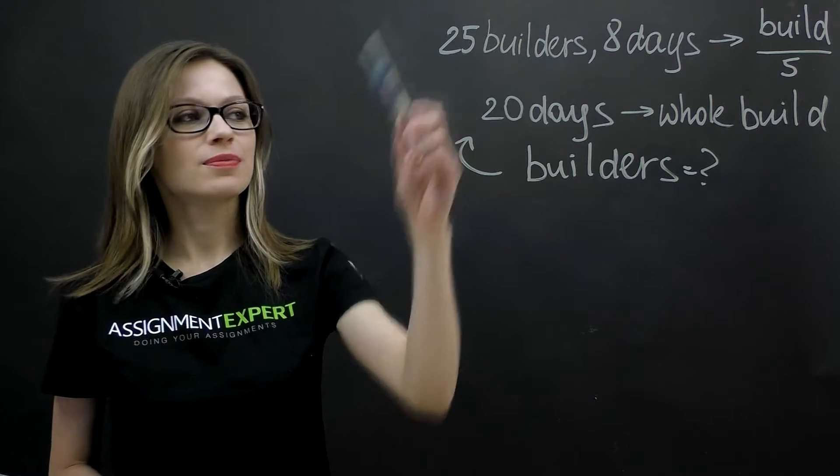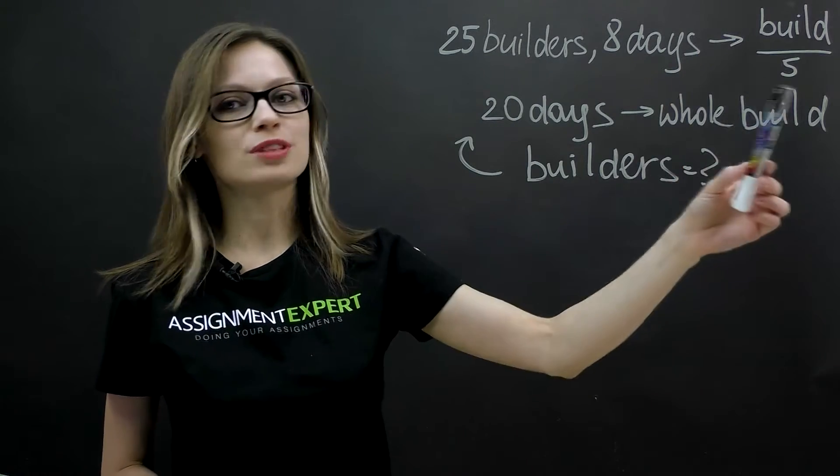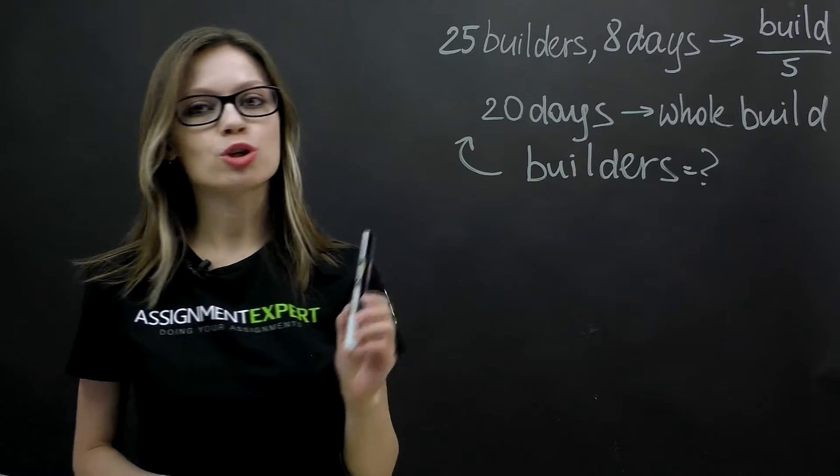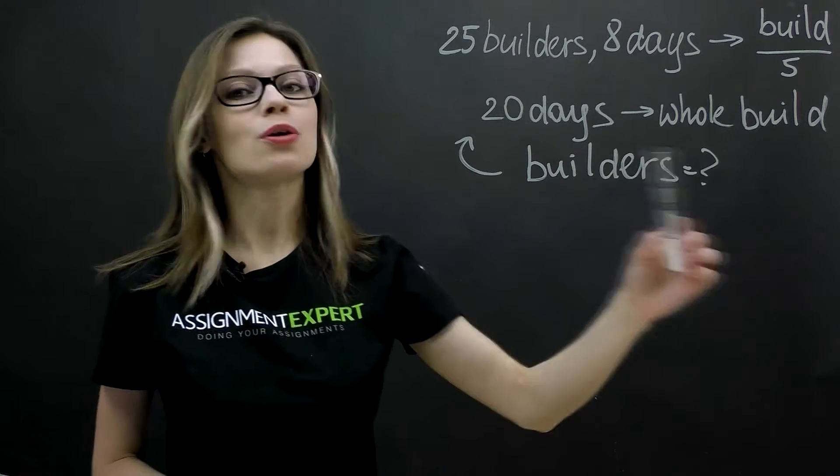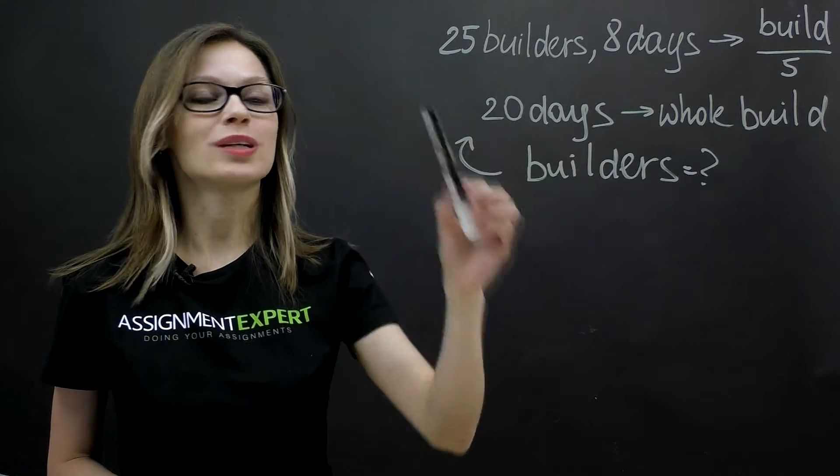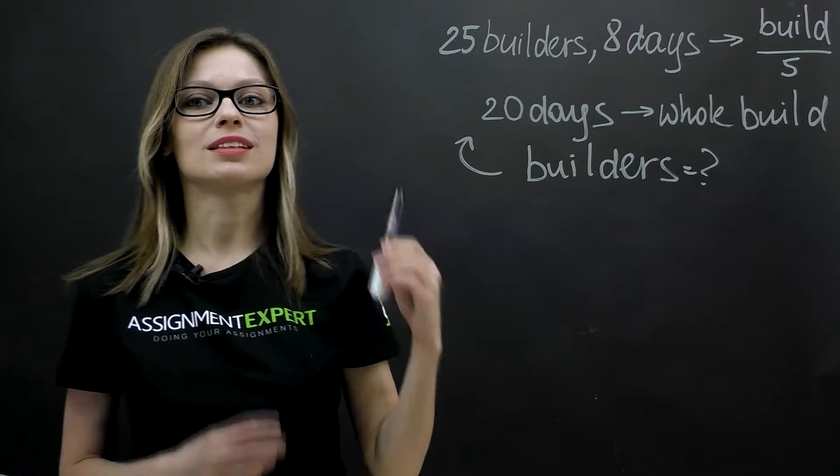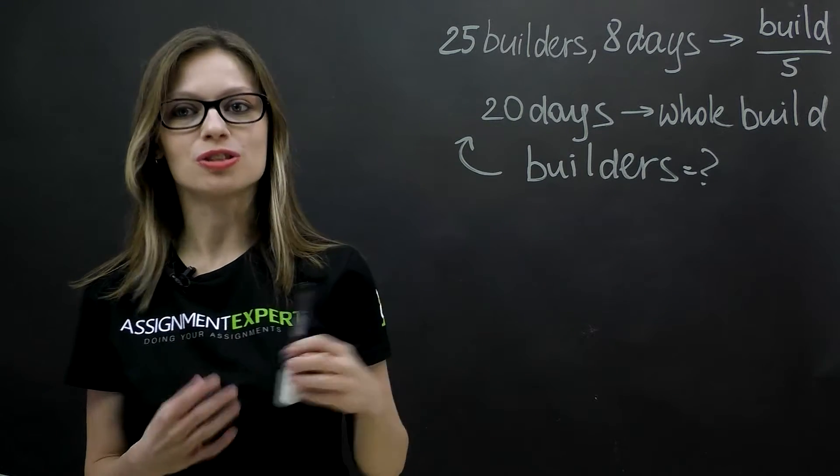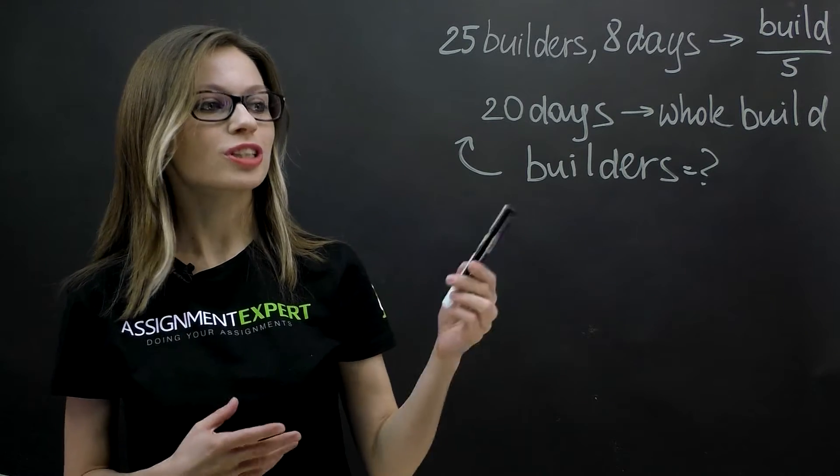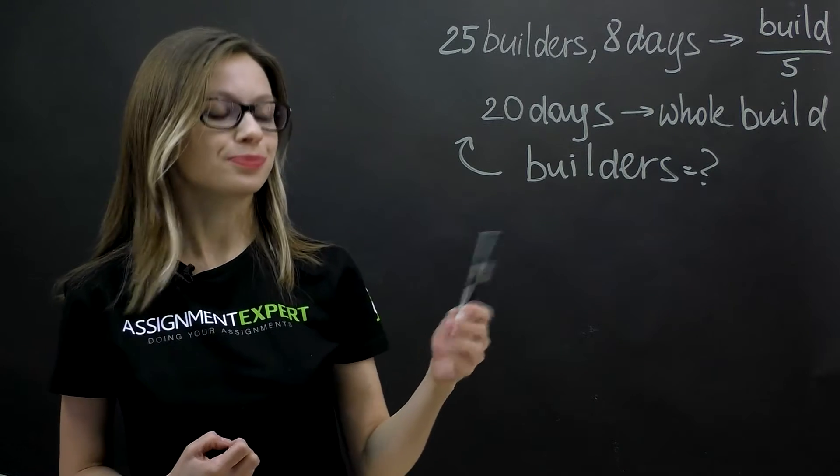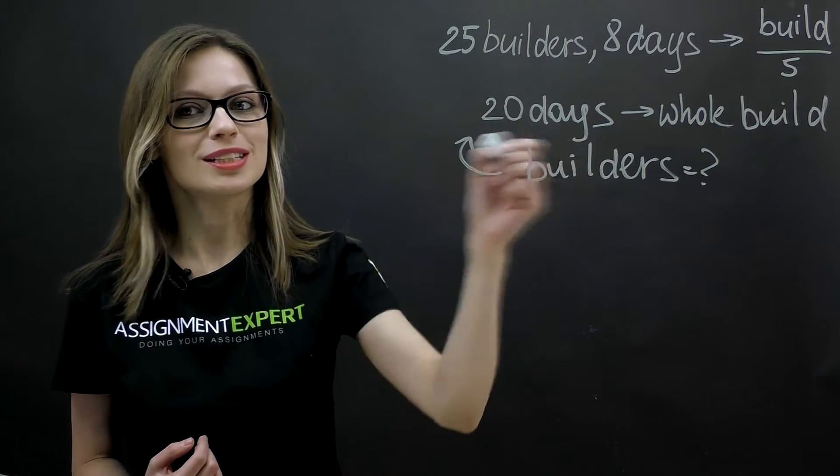25 builders have completed one-fifth of the build in eight days. Then the project leader decides that the build, the whole build, should be completed within 20 days. So what is the least number of additional builders the project leader should hire in order to complete the project within this new schedule, 20 days.